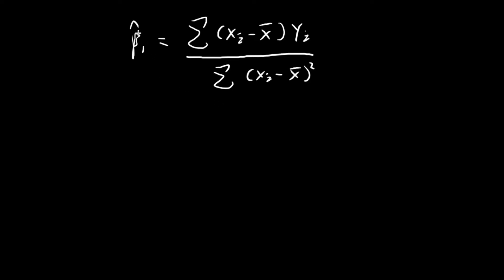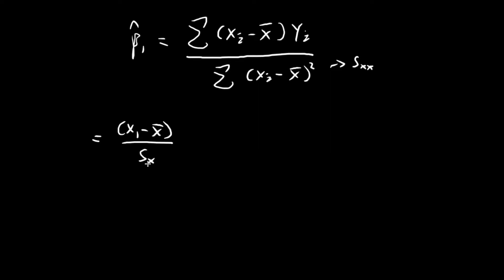So now we have this expression for the estimator of beta 1, and it's equal to this expression. This is the expression we've been working with for the past few videos. And you can see that we can express this expression as some constant times x1 minus the sample mean of x, divided by s_xx to represent the denominator, times y1 plus some constant times y2, all the way to the end.